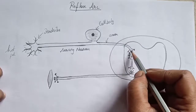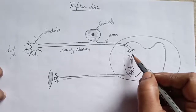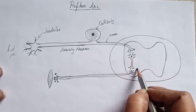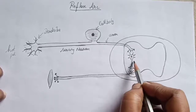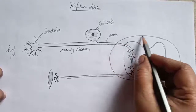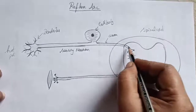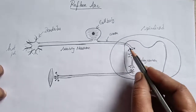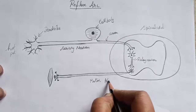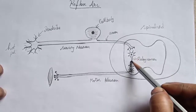The electrical signals stop at the axon ending and are converted into a chemical, which is released at the synapse. This chemical reaches the dendrites of the next nerve and is converted back into electrical impulses. This intermediate nerve — with dendrites, cell body, and axon — present inside the spinal cord is called the relay neuron. The relay neuron communicates between the sensory neuron and the motor neuron.